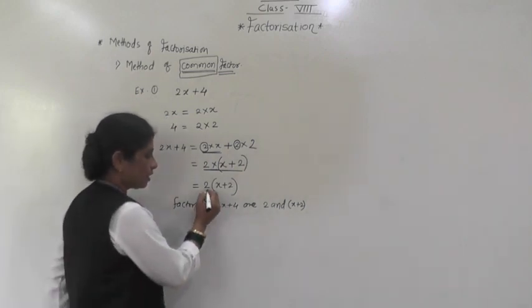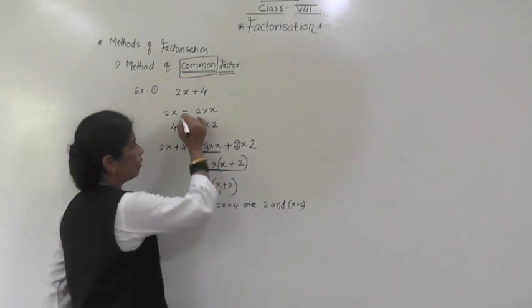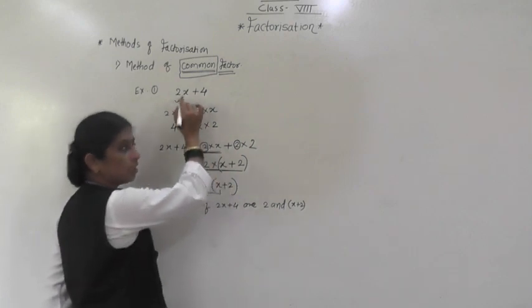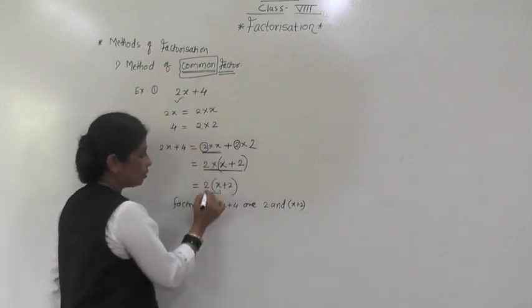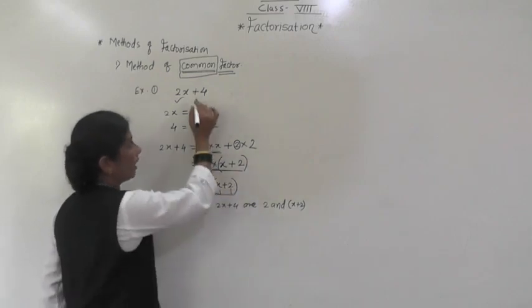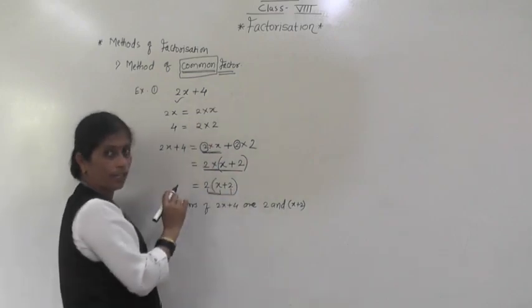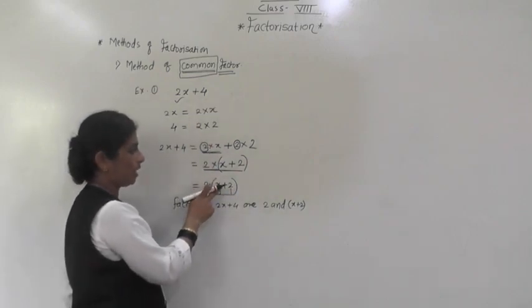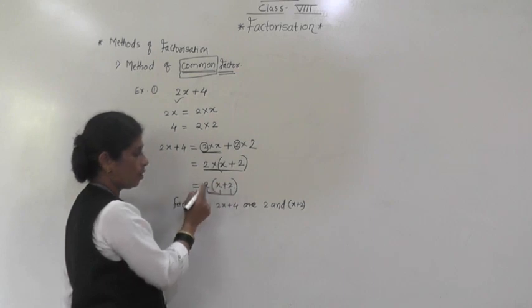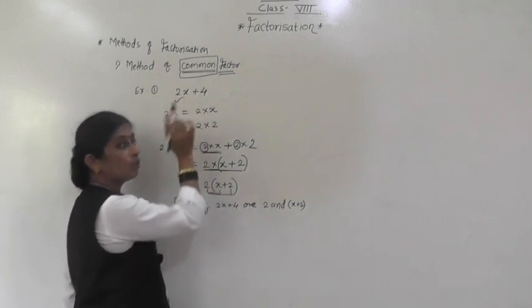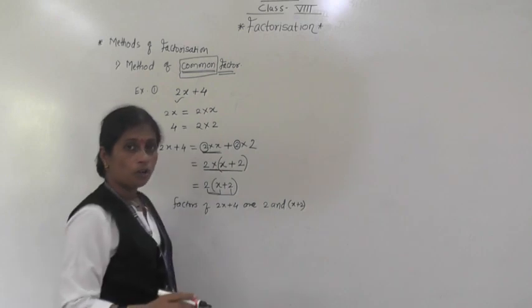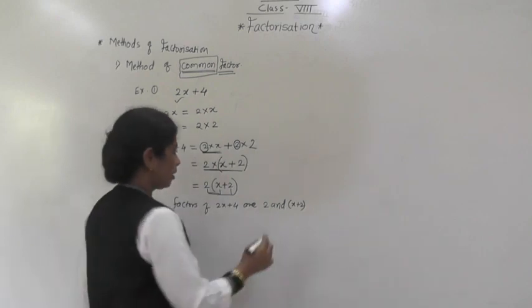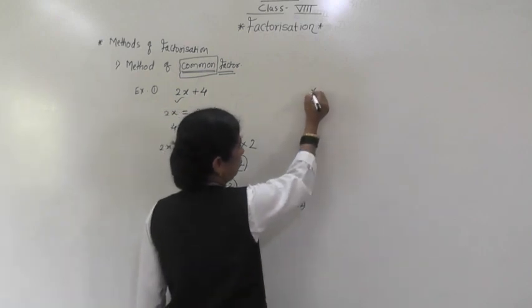So 2(x + 2) — this is called the method of common factor. Here 2 × x = 2x, and 2 × 2 = 4. So 2 is common in both terms. The factors of 2x + 4 are 2 and (x + 2).